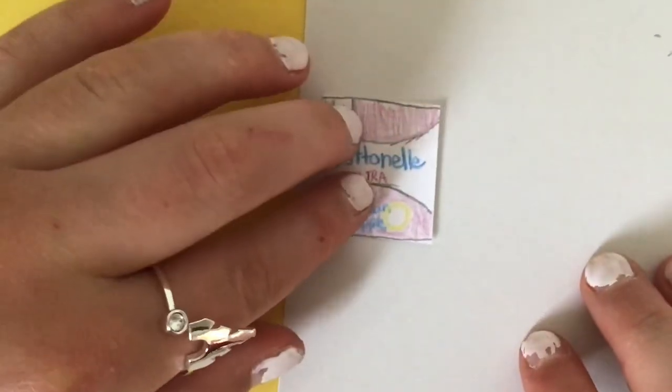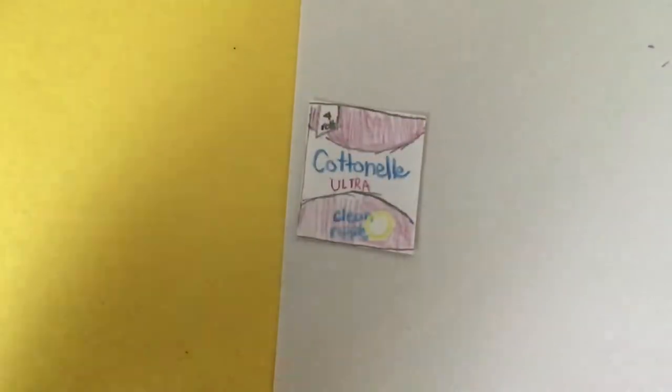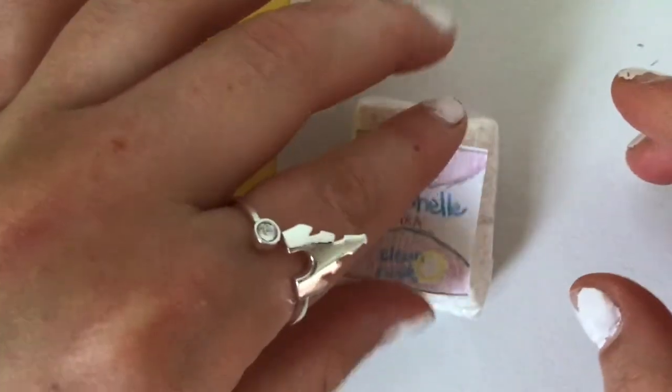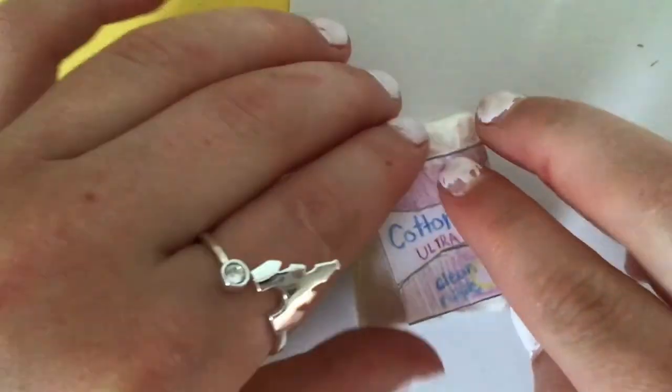Now cut it out. Once you cut it out, it should look something like this. Make sure to make it the right size so the toilet paper box is a little smaller and the paper wrapper fits around it.